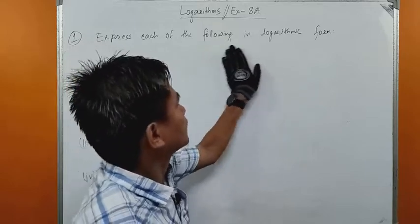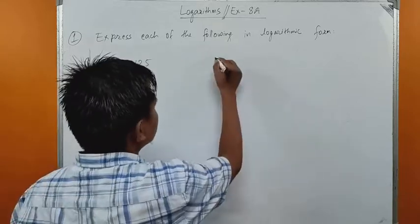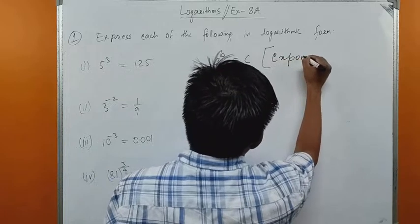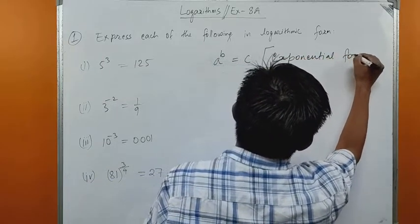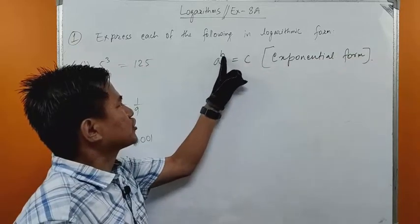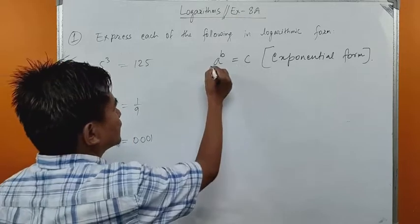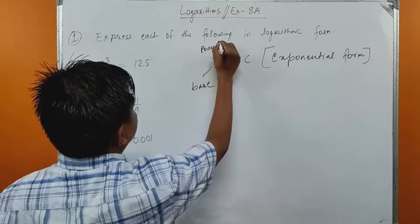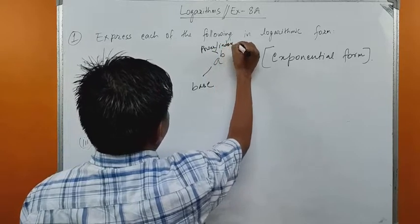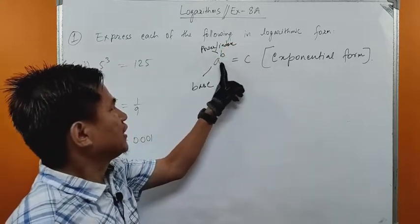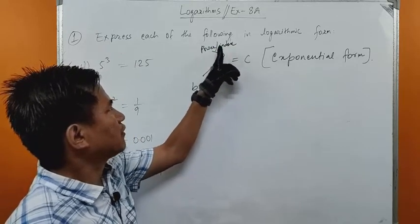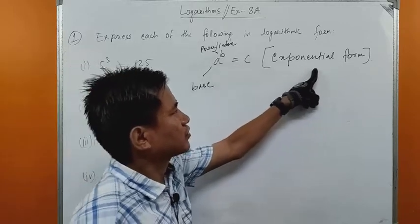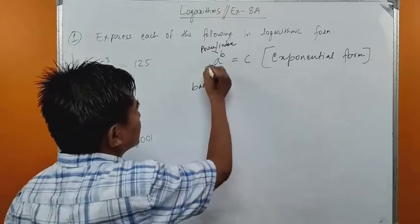Now let us understand some basics of logarithm. We know that a to the power b equals c is an exponential form — we learned this in Laws of Indices. This is called exponential form. Here, a is called the base, b is called the power or index, and c is the number on the right-hand side.